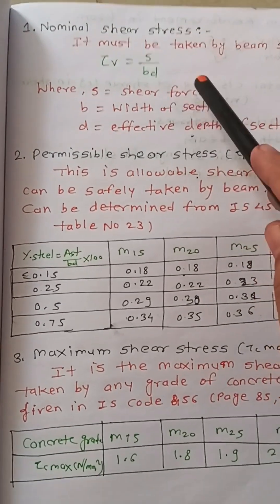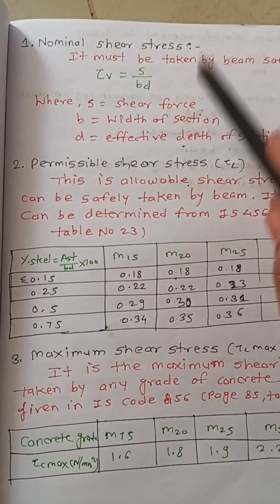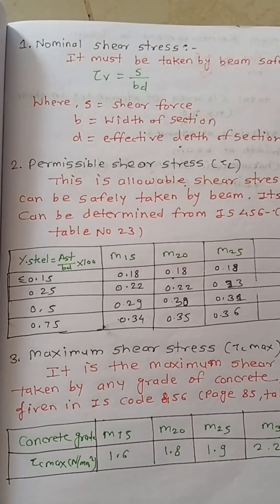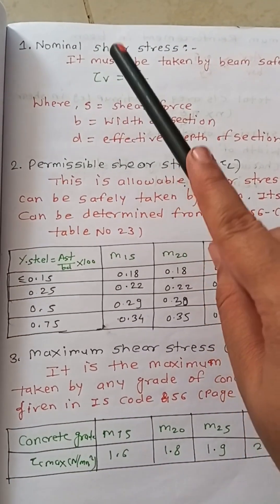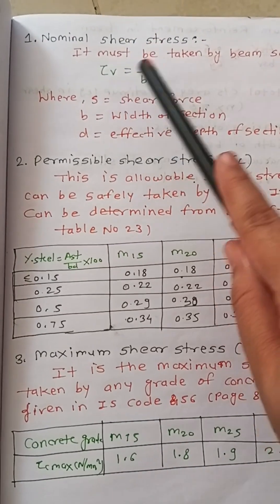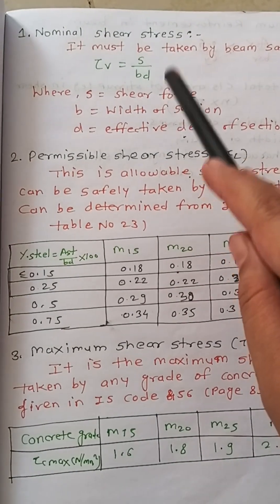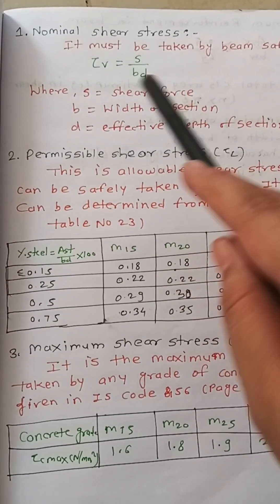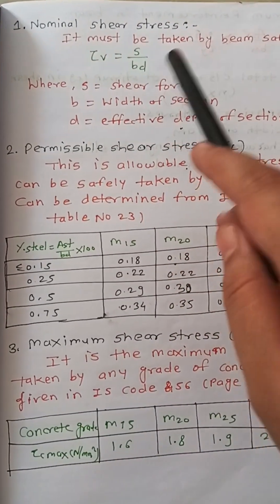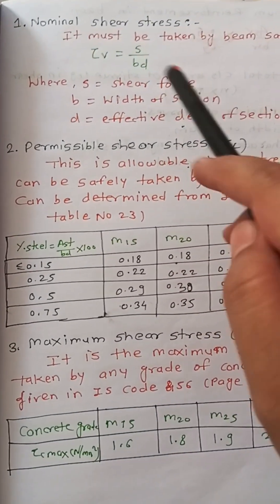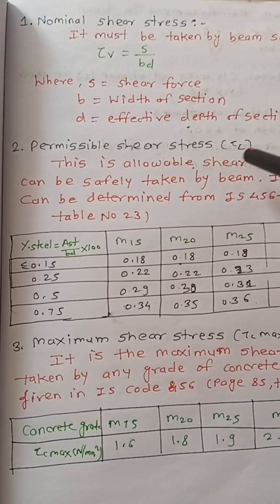Nominal shear stress is nothing but the actual shear stress taken by the beam — the stress safely taken by the beam. The formula for calculating it is: τv = V / (b·d), where V is the shear force, b is the width of the section, and d is the effective depth.